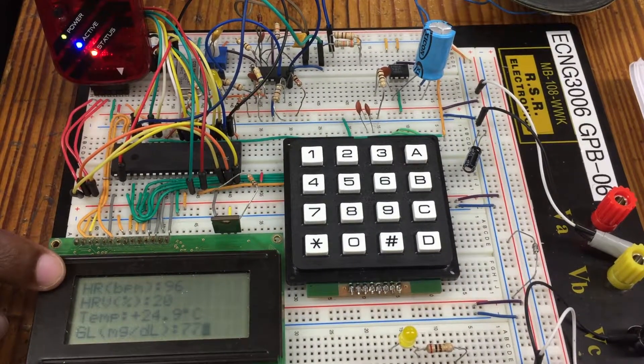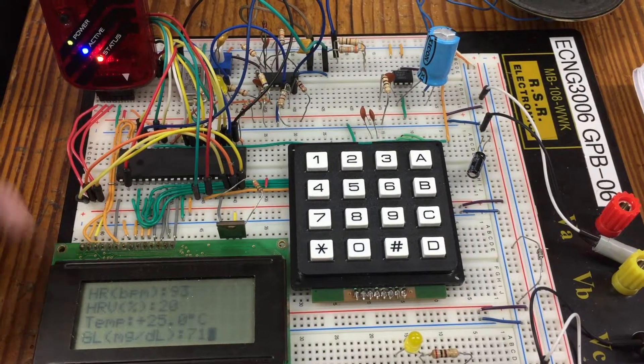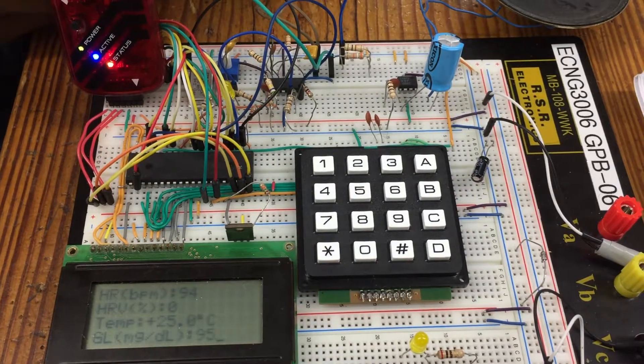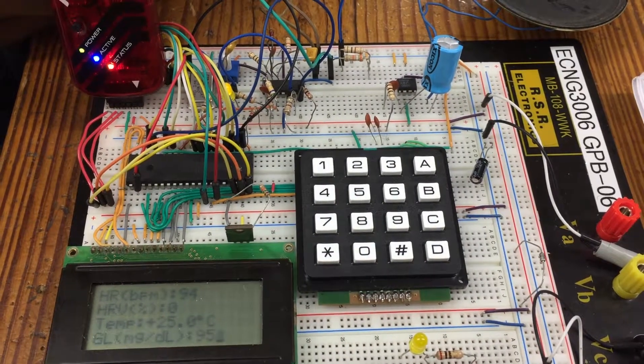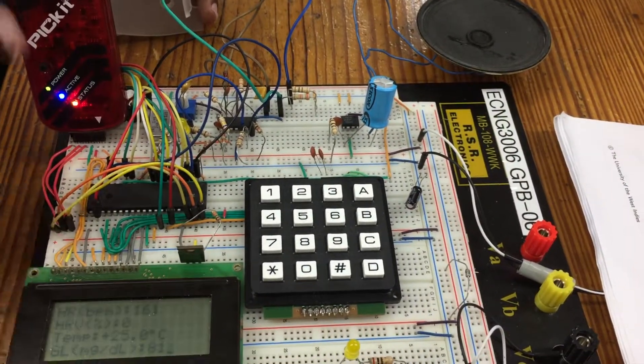So the range for heart rate is between 60 and 140, and 160 I think it is as set. So now we'll test to see if it goes out of the range, what will happen. So I'll just take my finger out and flicker it to simulate a very high heart rate. So you can see it sound the alarm.